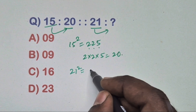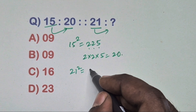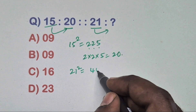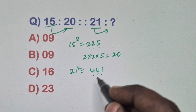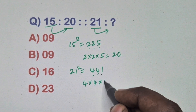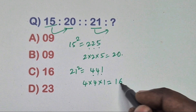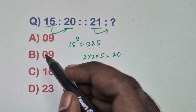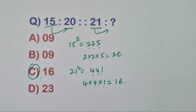Take 21: 21 squared is 441. Multiply these digits: 4 × 4 × 1 = 16. So option C is the correct answer.